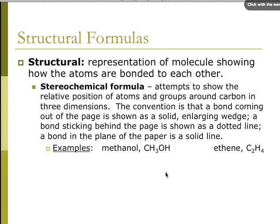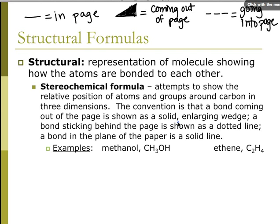Then we also have a stereochemical formula. This attempts to show more of the geometry — the relative positions of the atoms and groups around a carbon — and we are going to be drawing these in three dimensions. The convention is that a bond coming out of the page is shown as an enlarging wedge, coming out toward you.